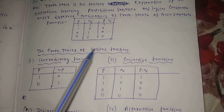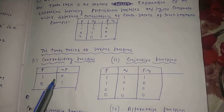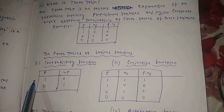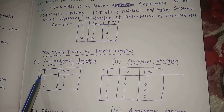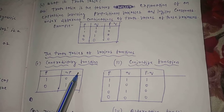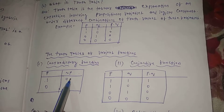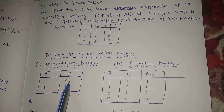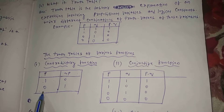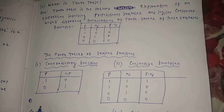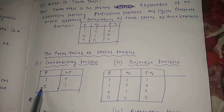The truth tables of various functions. First, the unary function — negation. P and negation P: if 'this is a mango' is true, then 'this is not a mango' is false. If 'this is not a mango' is true, then 'this is a mango' is obviously false. So the negation maps 1 to 0 and 0 to 1.